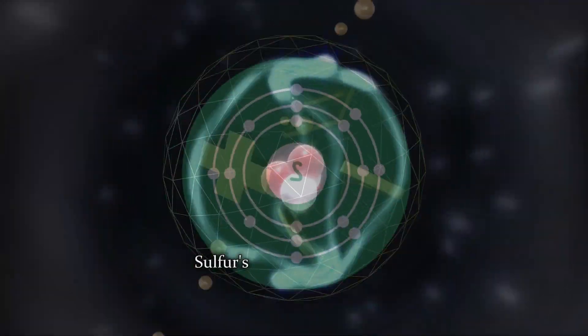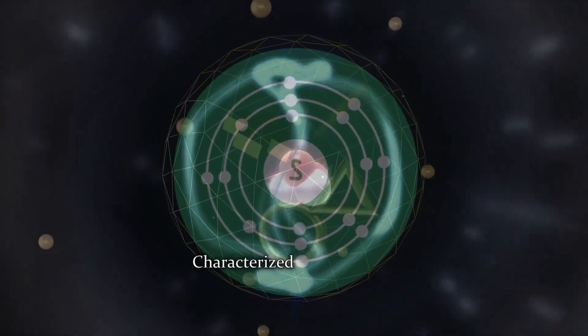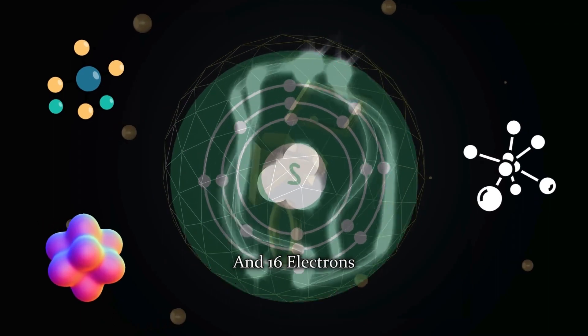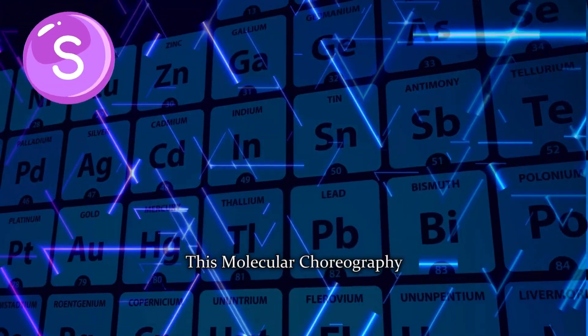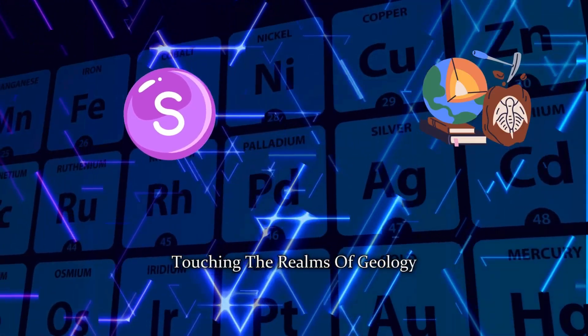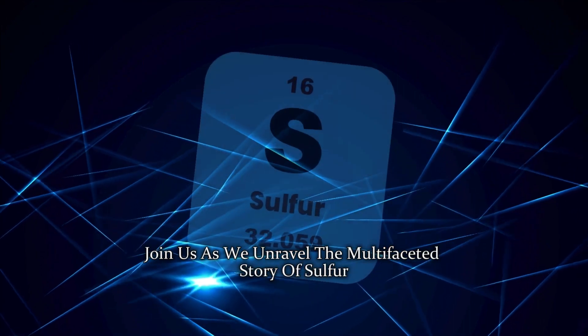Elemental presence. Sulfur's elemental dance is characterized by 16 protons, 16 neutrons, and 16 electrons. This molecular choreography extends its influence beyond the periodic table, touching the realms of geology, biology, and chemistry. Join us as we unravel the multifaceted story of sulfur.